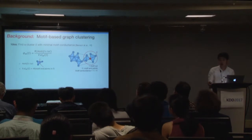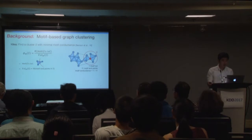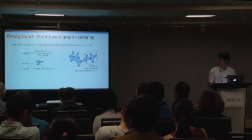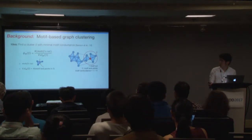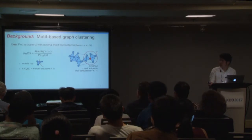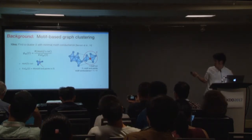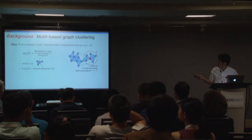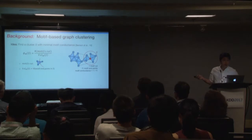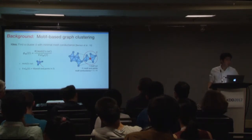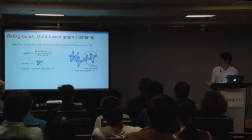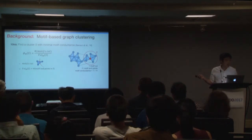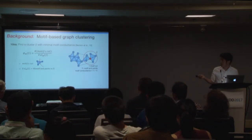This is the idea of a recent work by my co-authors, who aim to find a cluster S with minimal motif conductance. The motif conductance is the direct generalization of edge conductance: it is a ratio of the number of motif cuts to the motif volume, where the motif volume is the number of motif endpoints in S. For example, taking this graph and set S, this triangle motif contributes two endpoints in S, and there are three other triangles, each contributing three motif endpoints. Therefore, for this set S, there are 11 motif endpoints, and only one motif cut, so the motif conductance of this set S is 1/11.